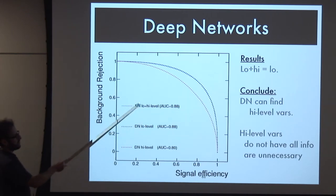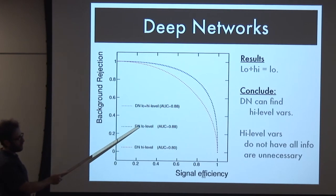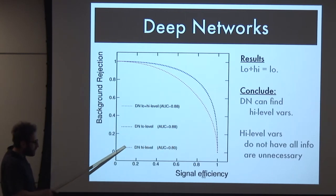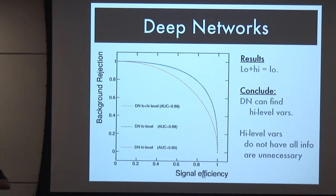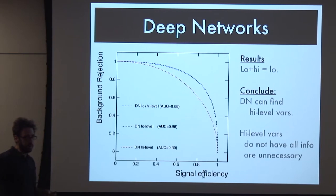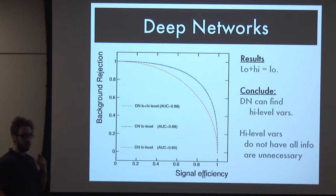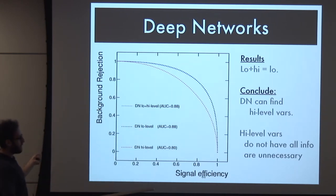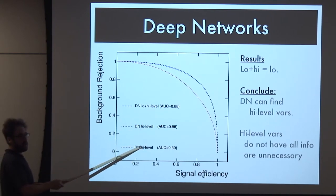The deep network with both low and high level shows the same performance as with just low level - confirming it figured out what the high-level information is. The high-level variables don't have all the information: they're a subset. Boiling 21 dimensions down to 7 clearly throws out some information. I feared that everywhere in particle physics we were doing feature selection and physics preprocessing - throwing away information just to make our networks function. Here, finally, was a network you could throw low-level information at, and it would do better than imagined and might have extracted all the information.